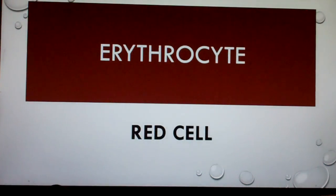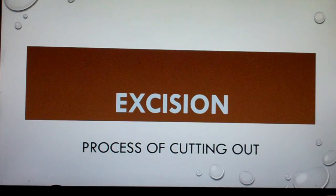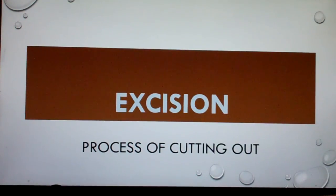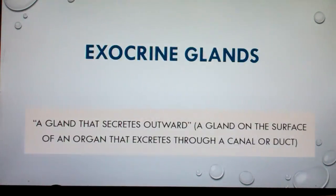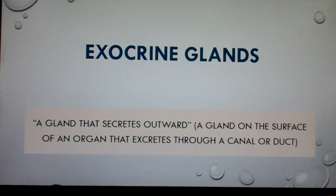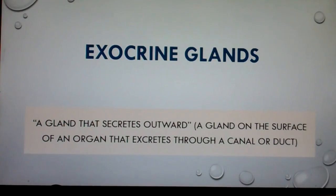Erythrocyte: red cell. Excision: process of cutting out. Exocrine glands: a gland that secretes outward — a gland on the surface of an organ that excretes through a canal or duct.